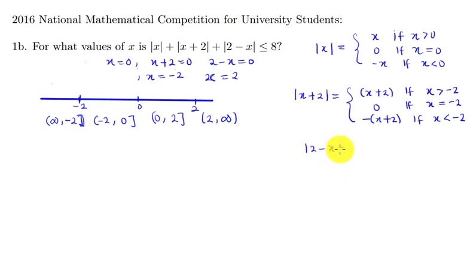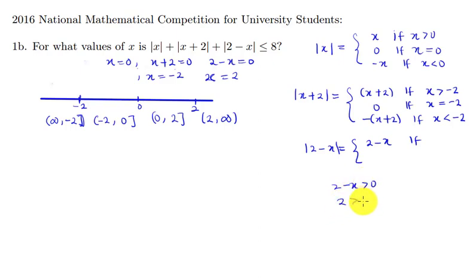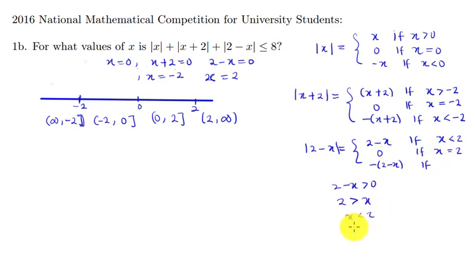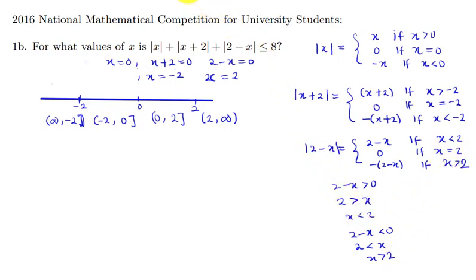The absolute value of 2 minus x is defined as 2 minus x if x < 2, zero if x equals 2, and negative of 2 minus x if x > 2.